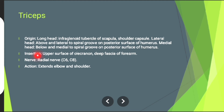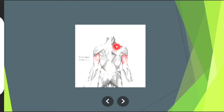Insertion: upper surface of olecranon and deep fascia of forearm. Nerve supply: radial nerve. Action: involving elbow extension and shoulder extension. The muscle in red is triceps.